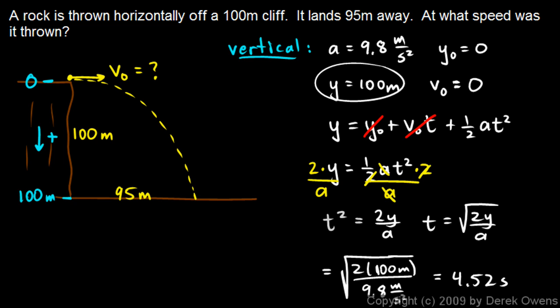So now that we found the time, we can use that with our horizontal motion. And that's why I did the vertical first, because I knew enough information vertically to find the time. Now I'll do the horizontal. Horizontally, I can use this equation: x equals x0 plus v0 t plus 1/2 at squared. Now this equation is the same equation I was using over here. I just typically write an x there when I'm dealing with the horizontal, and a y when I'm dealing with the vertical. But conceptually, they're the same.